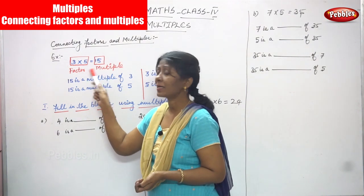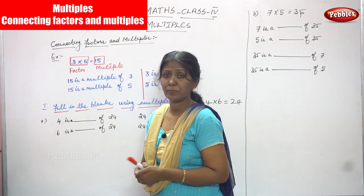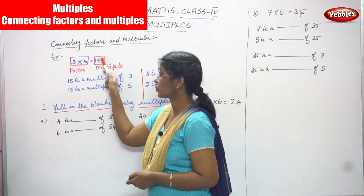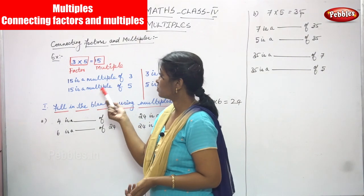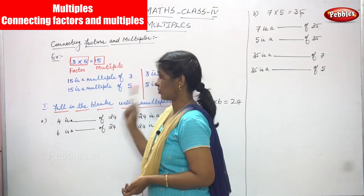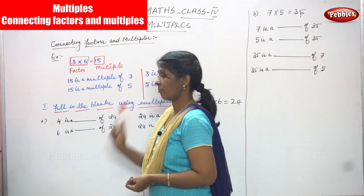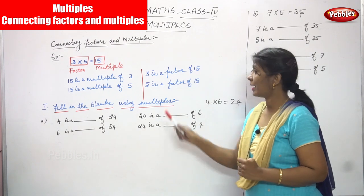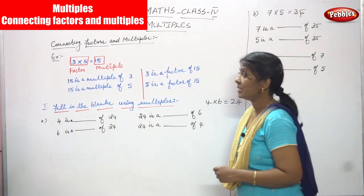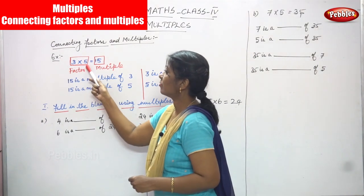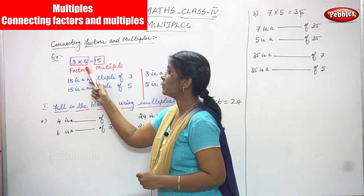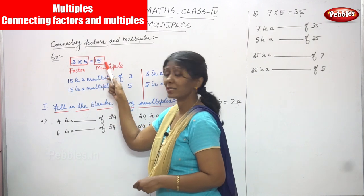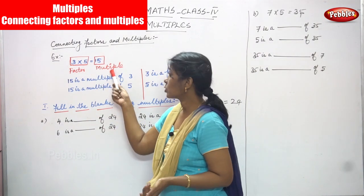So 15 is a multiple of 3, and 15 is a multiple of 5 at the same time. And 3 is a factor of 15, and 5 is a factor of 15. The numbers that are multiplied are called factors, and the product you get is called a multiple.